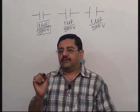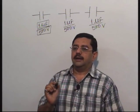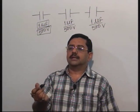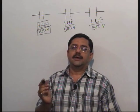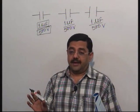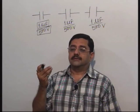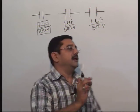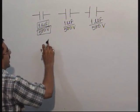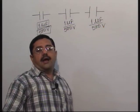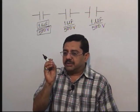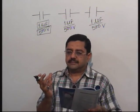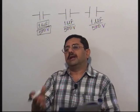A person has a capacity to eat at most 10 to 15 rotis at a time — he cannot eat more than that at a time. Otherwise the person will get punctured — he will burst, his stomach will explode. Similarly here, this is the maximum potential that can be applied across a capacitor, because the dielectric present inside has some strength. Above this potential, it will get punctured.